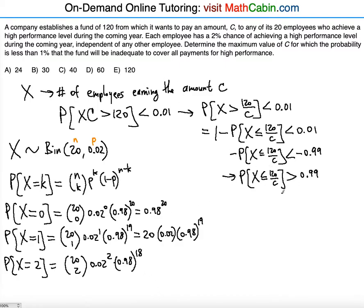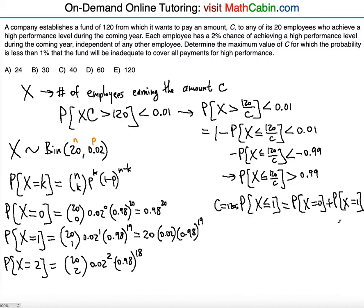If we substitute the answer choices starting with the greatest, C equals 120: we need P(X ≤ 120/120) = P(X ≤ 1), which is P(X=0) plus P(X=1). We need this to be greater than 0.99. Plugging into the calculator, this gives about 0.94, which is less than 0.99. So C equals 120 does not work.